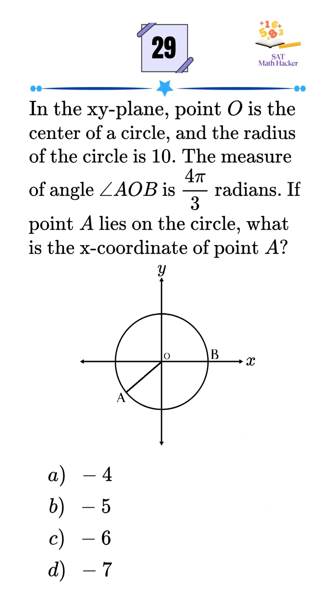In this SAT question, we're given a circle centered at point O with a radius of 10. The angle AOB measures 4π over 3 radians, and we're asked to find the x-coordinate of point A.